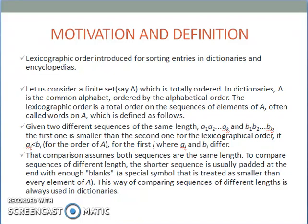Suppose you have two words which are of different lengths. To compare sequences of different lengths, the shorter sequence is usually padded at the end with enough blanks. A blank is a special symbol that is treated as smaller than every element of A. This way of comparing sequences of different lengths is always used in dictionaries, where the first smaller term would be the first word, the second smaller term would be the second word, and so on.